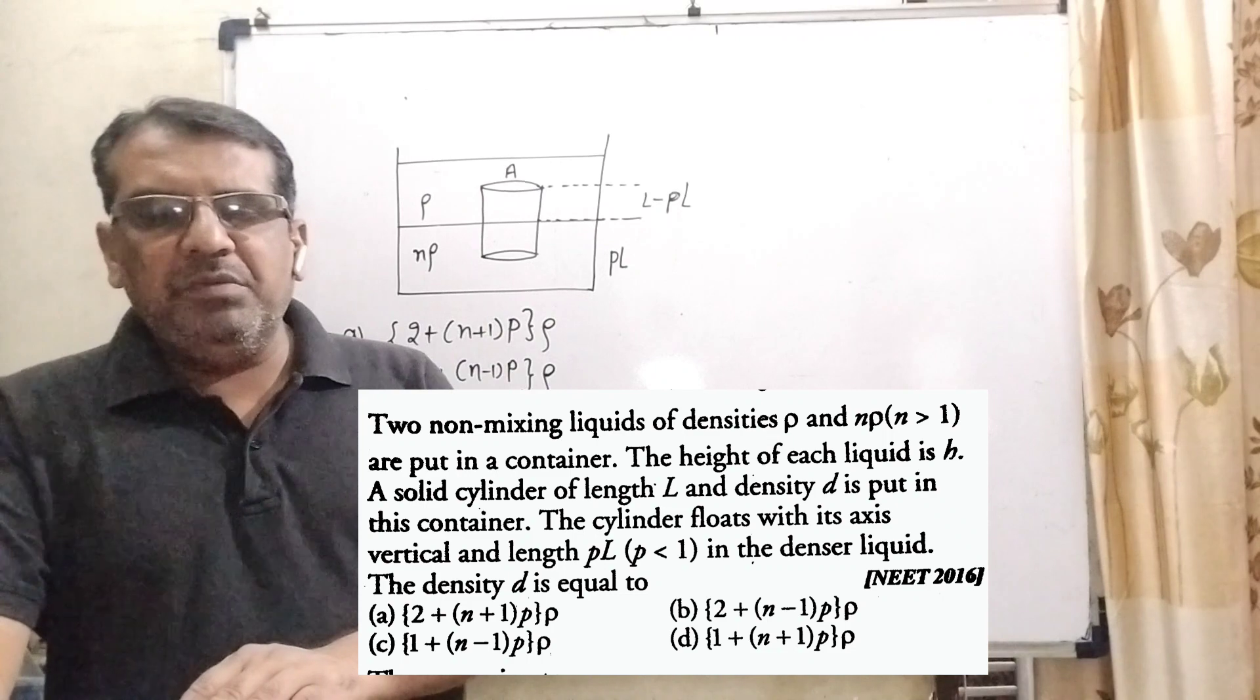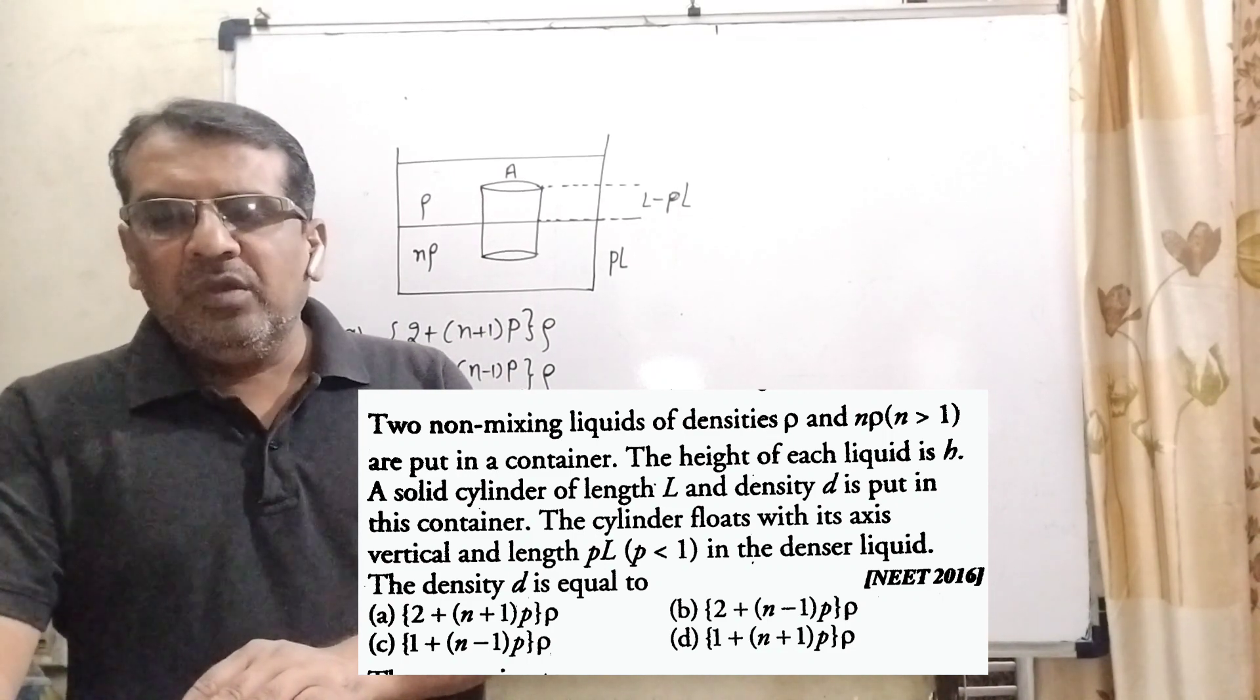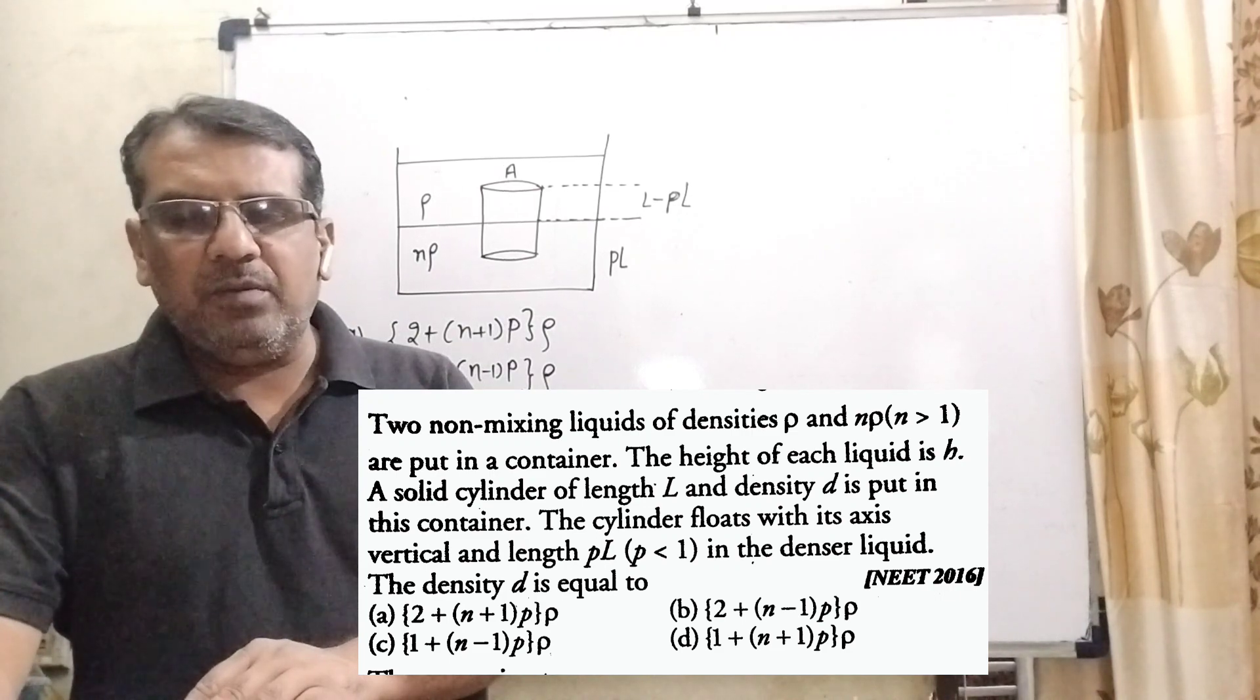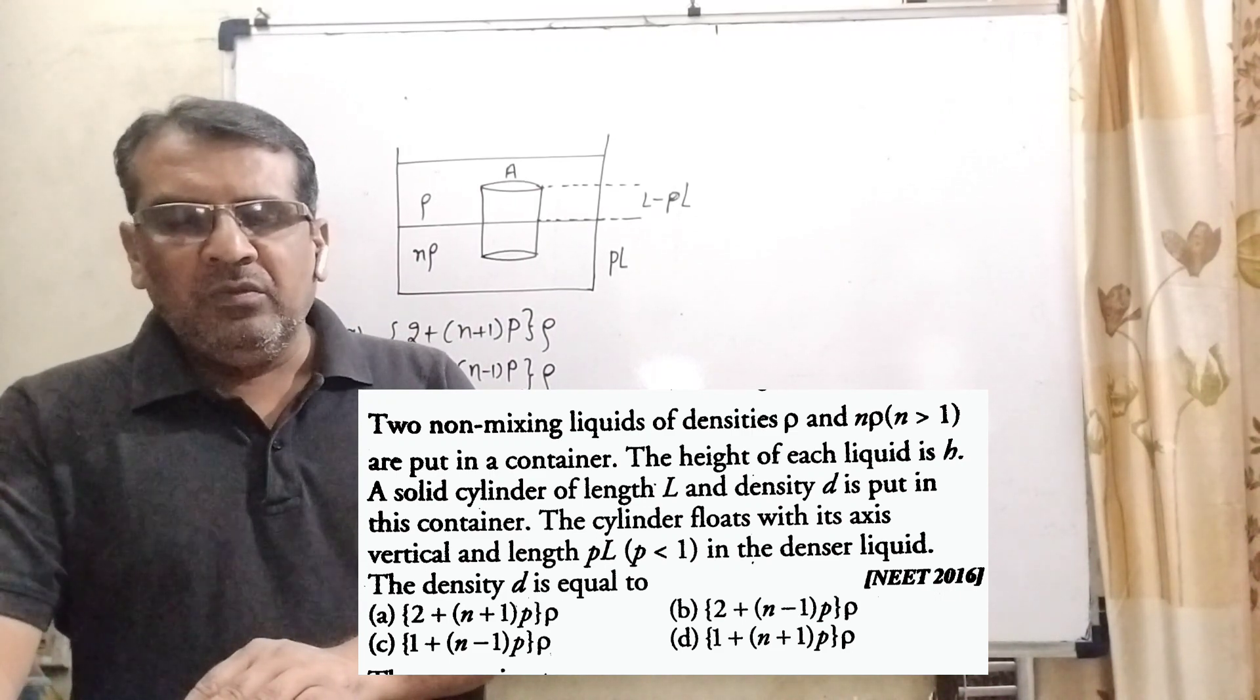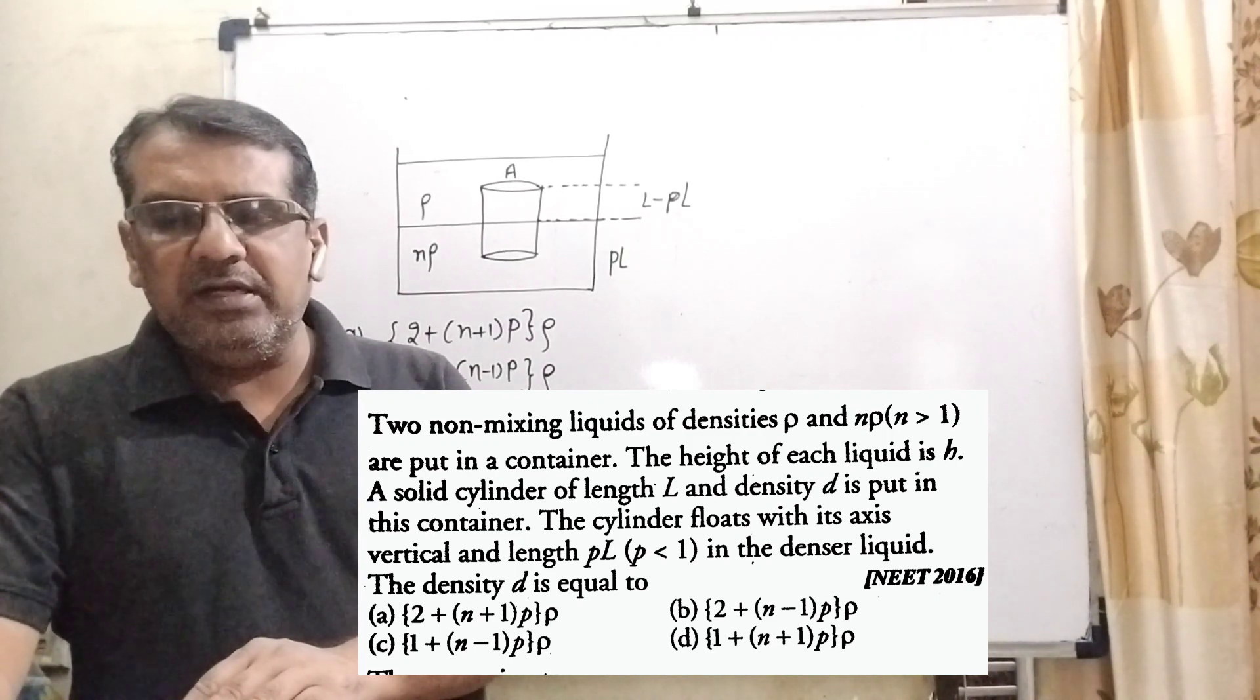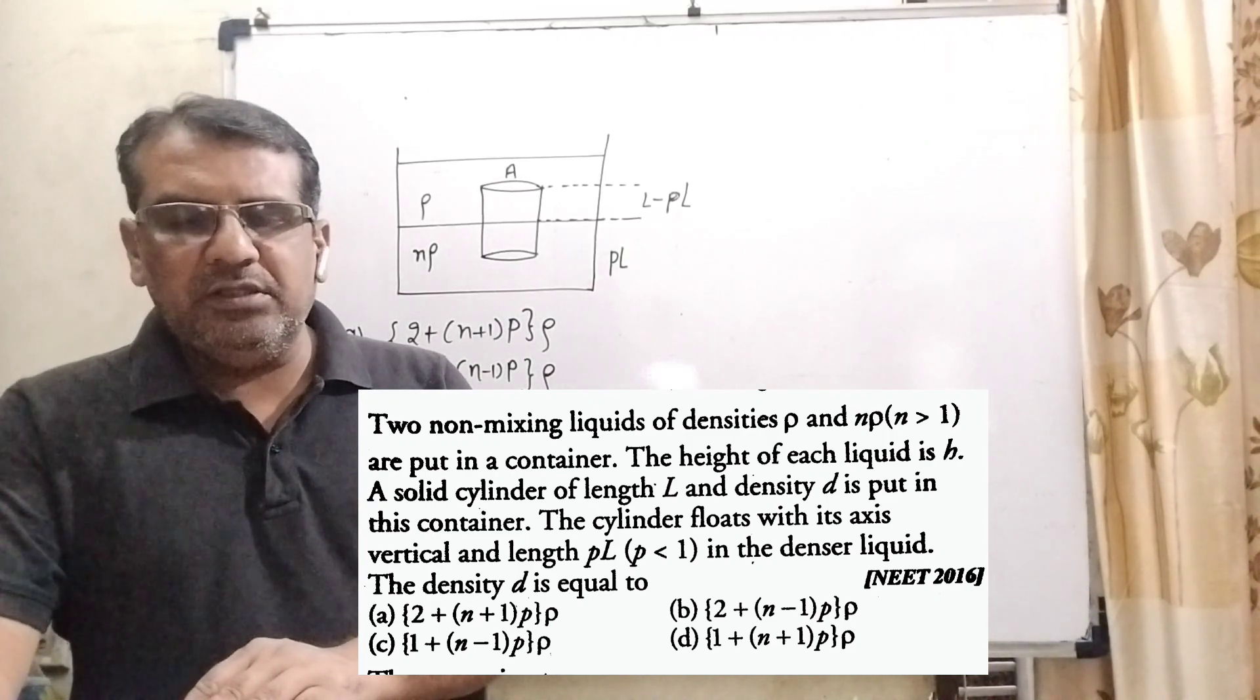Now here is the question. Two non-mixing liquids of densities ρ and nρ, here n is greater than 1, are put in a container. The height of each liquid is h. A solid cylinder of length L and density d is put in this container.